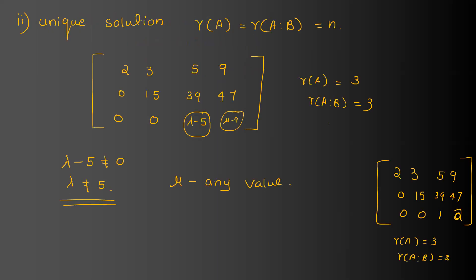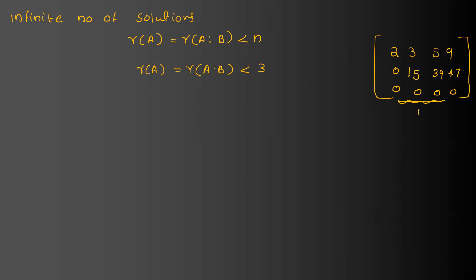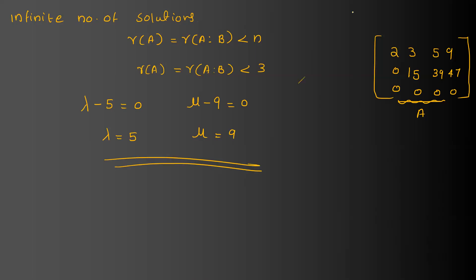For infinite solutions, rank of A equals rank of [A|b] and is less than number of unknowns. The matrix becomes: 2, 3, 5, 9 / 0, 15, 39, 47 / 0, 0, 0, 0. This requires lambda - 5 = 0 and mu - 9 = 0. Therefore lambda = 5 and mu = 9.